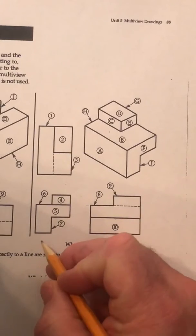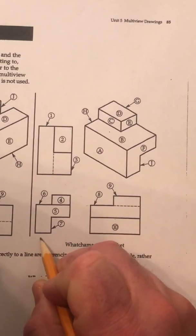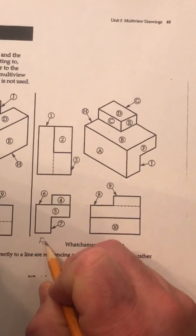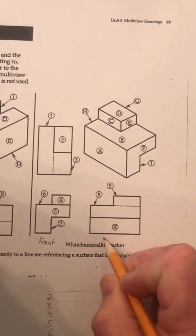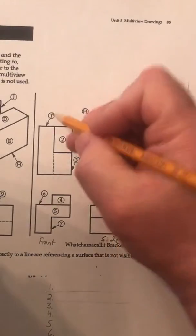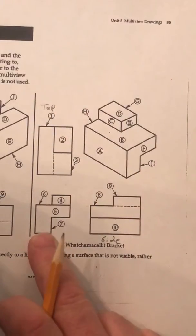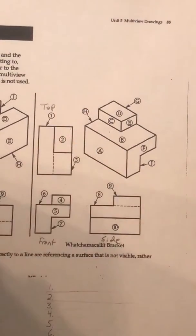So first, I'm going to start by labeling, following our standard third angle projection. This is the front view. This is going to be our right side view, or we'll just label that the side view now. And of course, this is the top view up here, and that's the traditional layout, front, side and top.